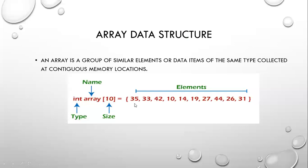Indexing starts from 0. The indices go from 0, 1, 2, 3, 4, 5, 6, 7, 8, 9 — these are all the array elements.